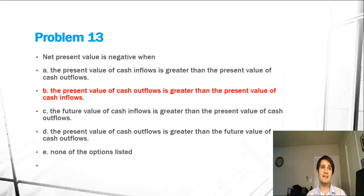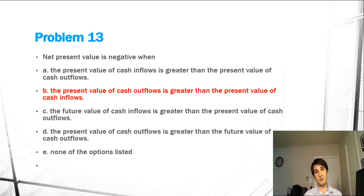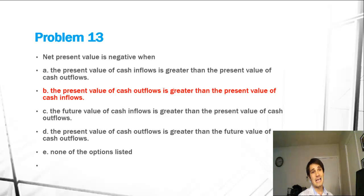The reason A is incorrect is because the present value of cash inflows is greater than the present value of cash outflows. Well, if inflows are greater, then you have more, and that is a positive net present value.